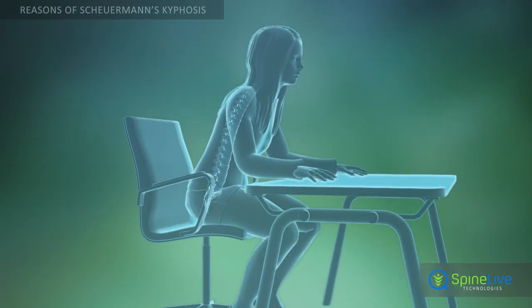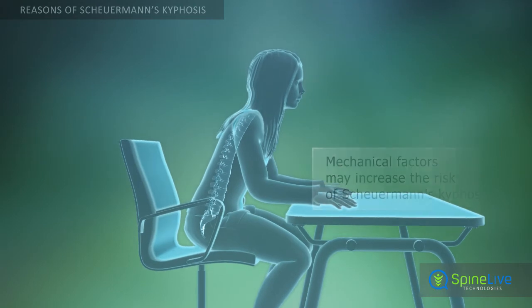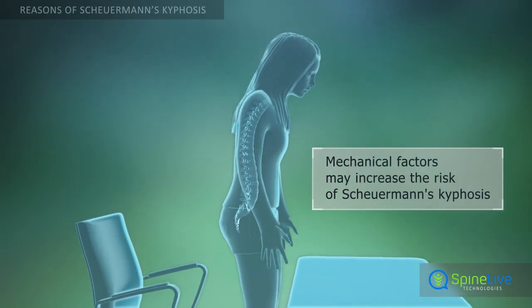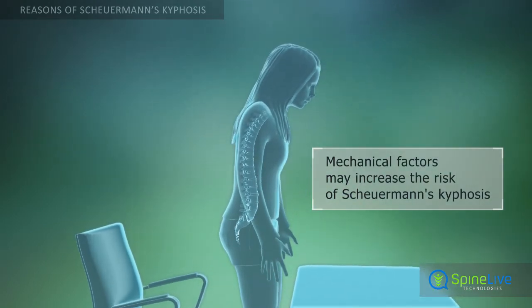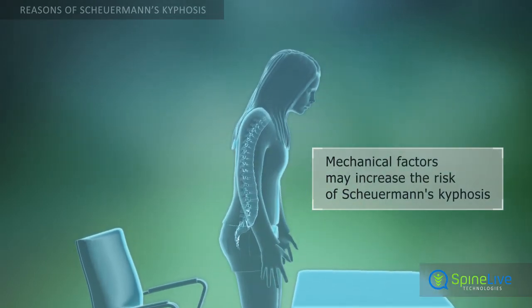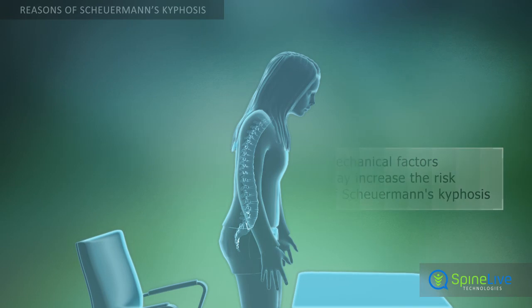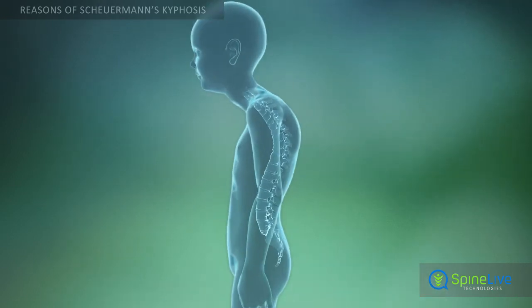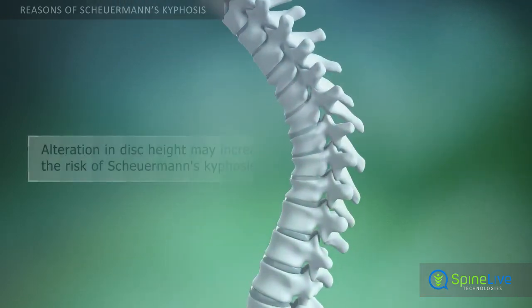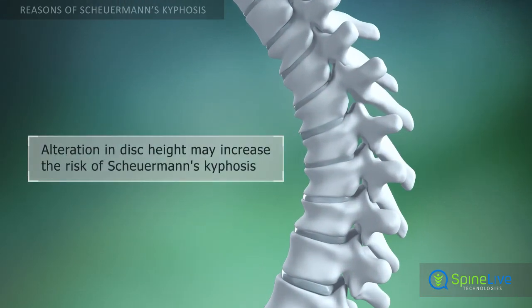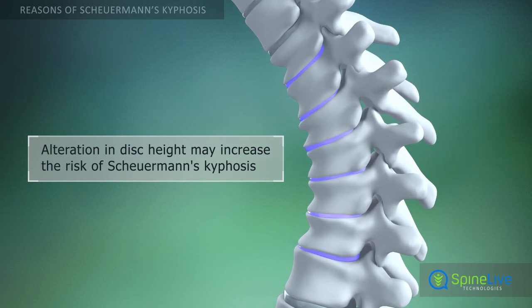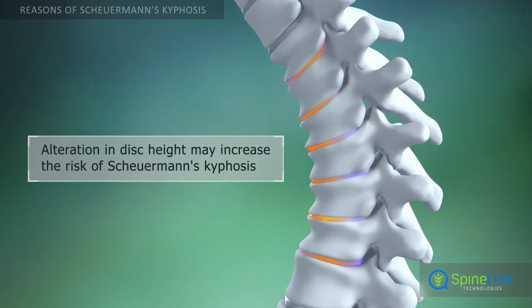According to another theory, Scheuermann's kyphosis may occur due to mechanical factors, such as unhealthy sitting positions. There is also a theory that explains the cause of Scheuermann's kyphosis as an alteration in disc height due to collagen changes.